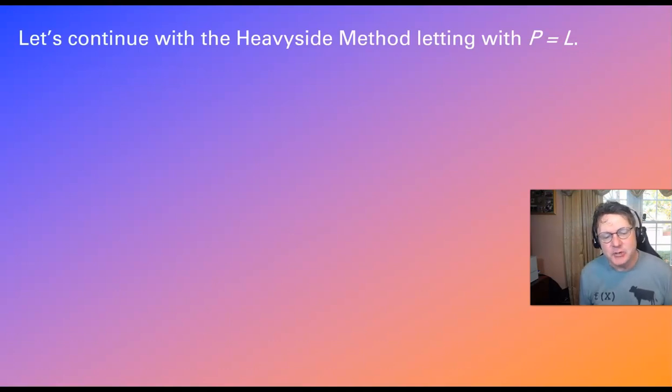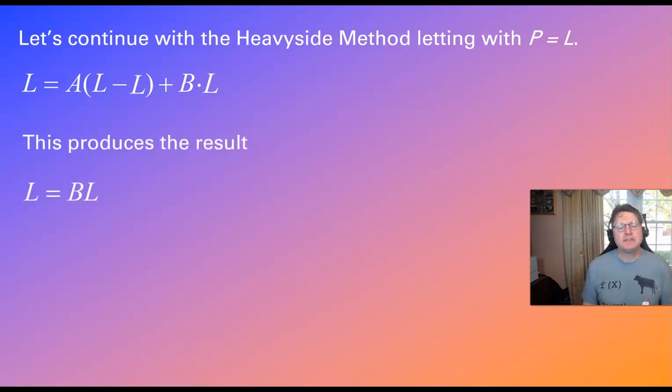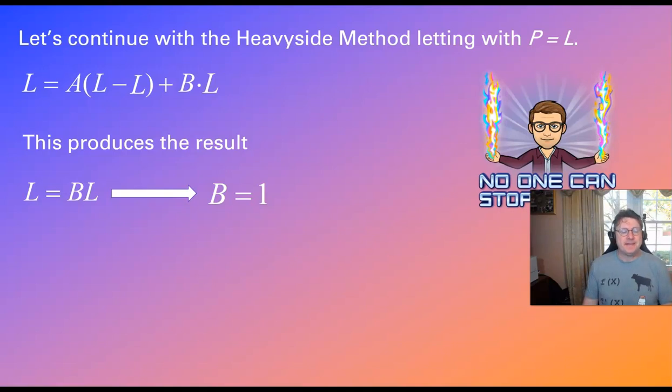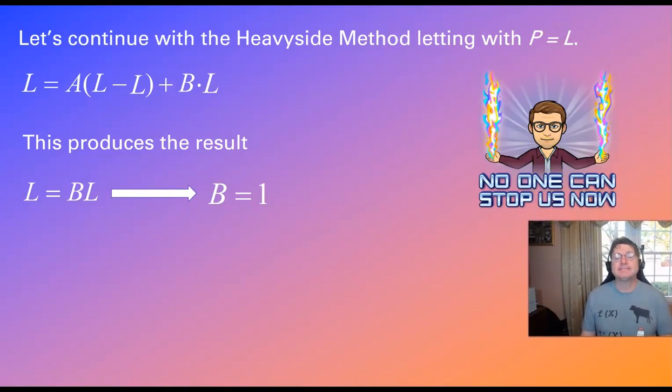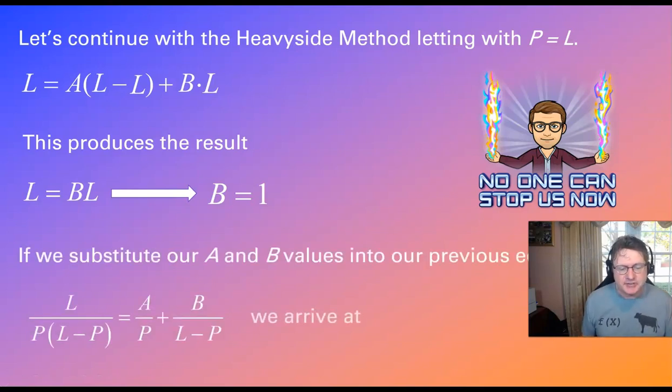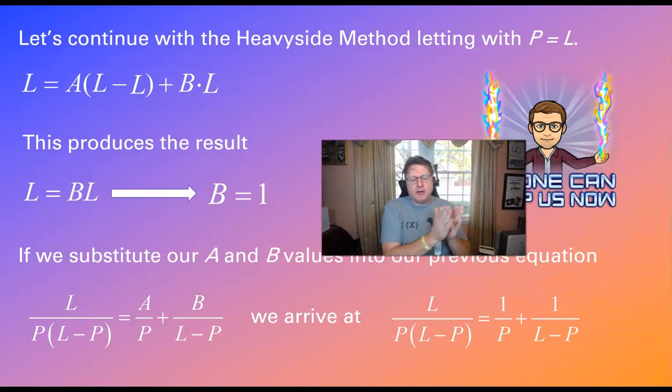So let's continue with the Heaviside method. And this time we're going to let P be L. Because as you can see, P being L is a very opportunistic value that will cause a cancellation. So if our P were to be replaced with L, we see that we have L equivalent to B times L, which is going to lead to the fact that B is going to be one as well. Well, we've come really far. Nobody can stop us now. So where are we? Well, if we were to take a look at this and substitute our A and B values into our previous equation, we've got our original partial fraction decomposition now solved where A and B are both one.